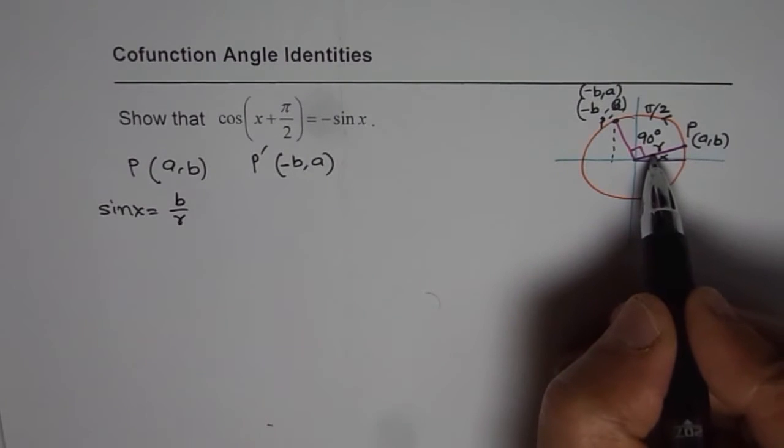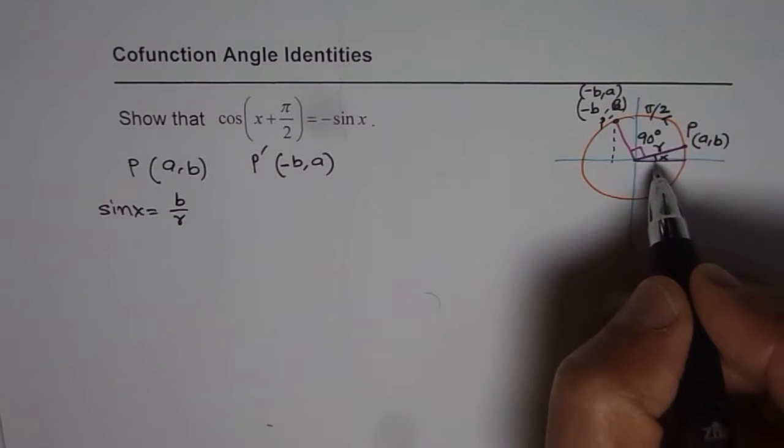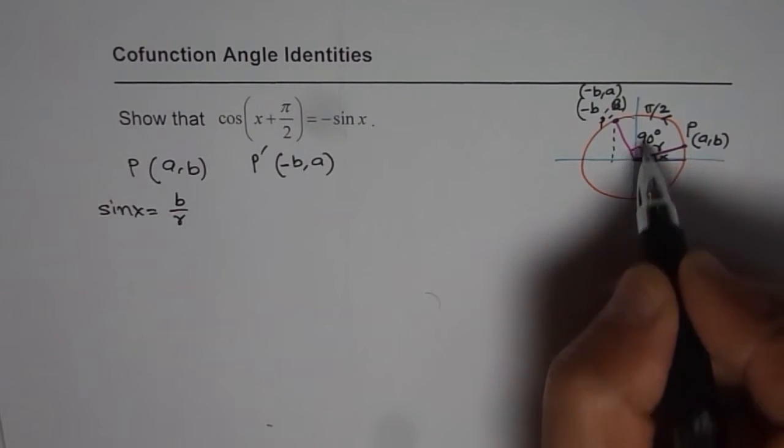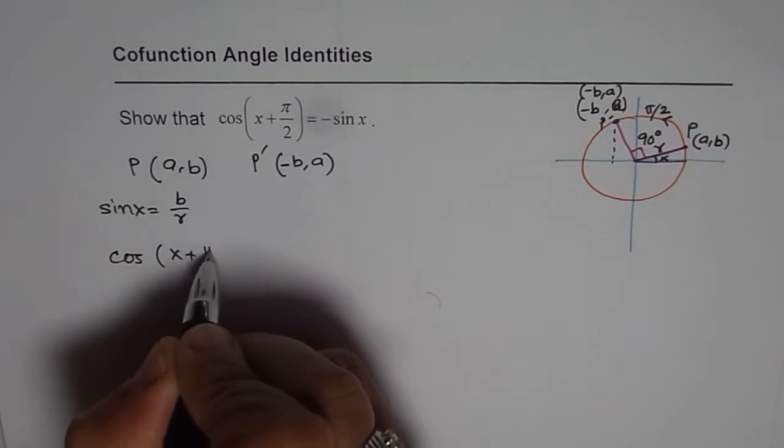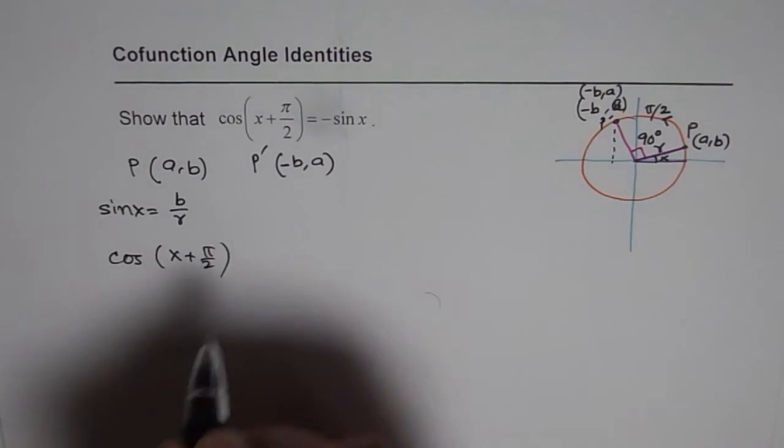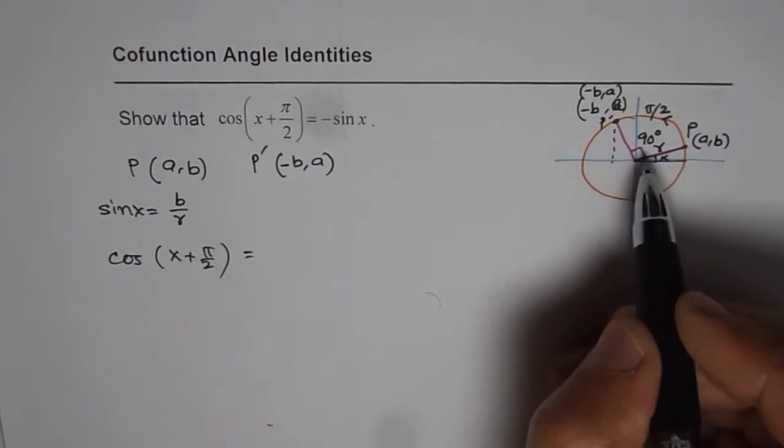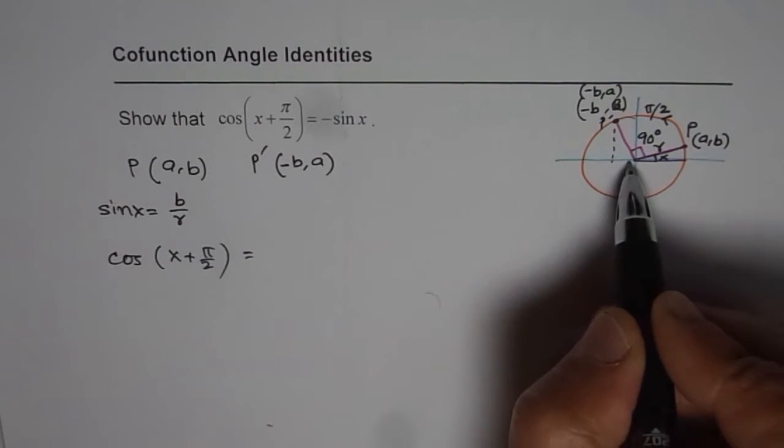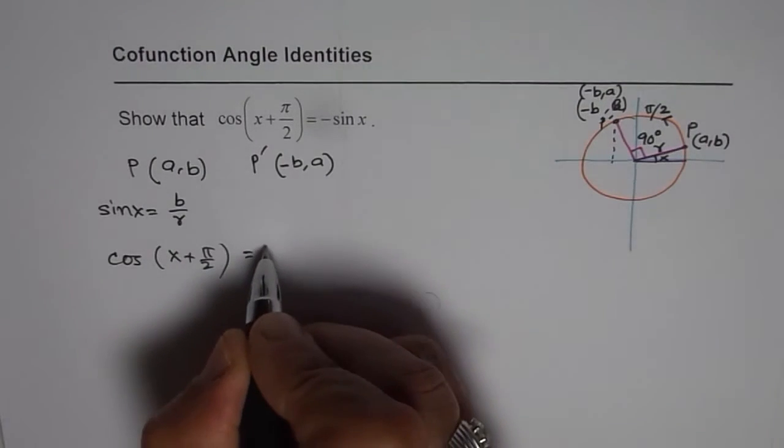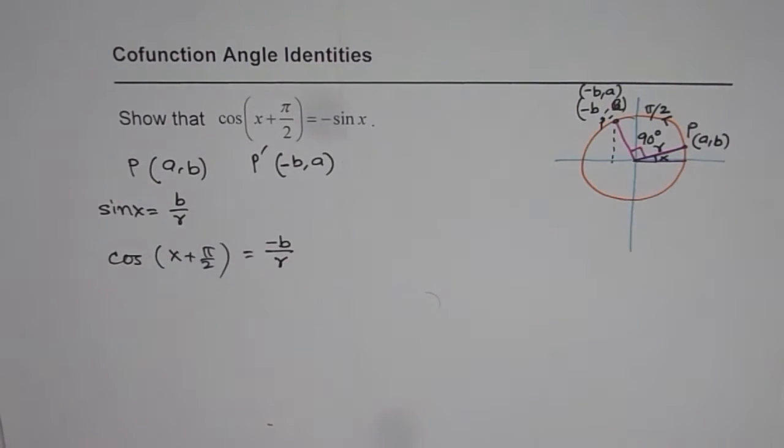Now once it is rotated counterclockwise by 90 degrees, the angle here becomes x plus 90 degrees. Now at this position, what is cos of x plus pi by 2 or x plus 90 degrees? Now if you look at this triangle, then cos is adjacent side over the hypotenuse. Adjacent side is minus B, so it is minus B over R.